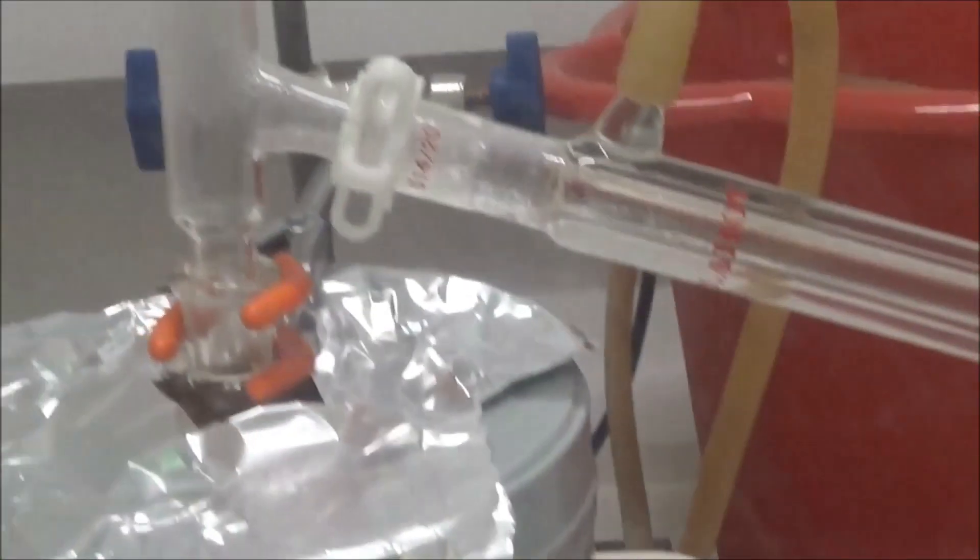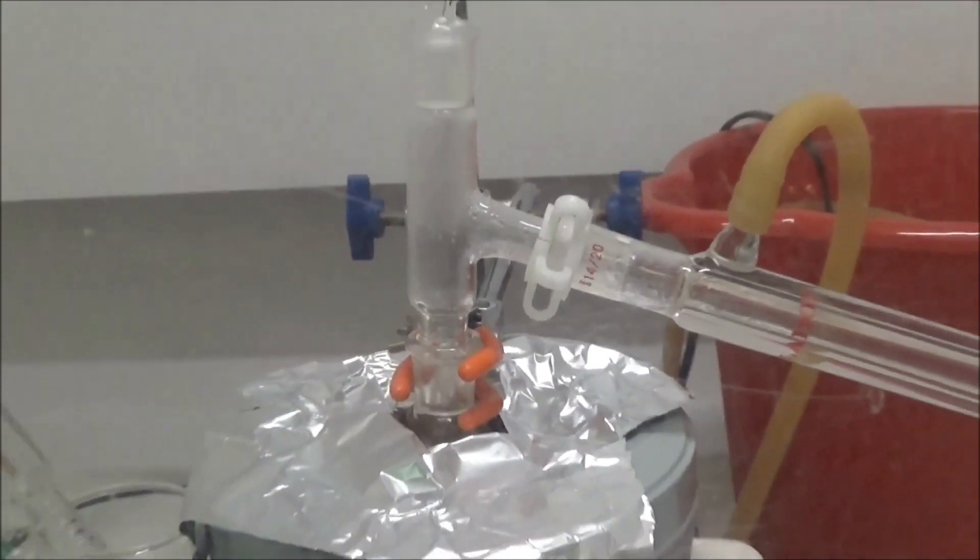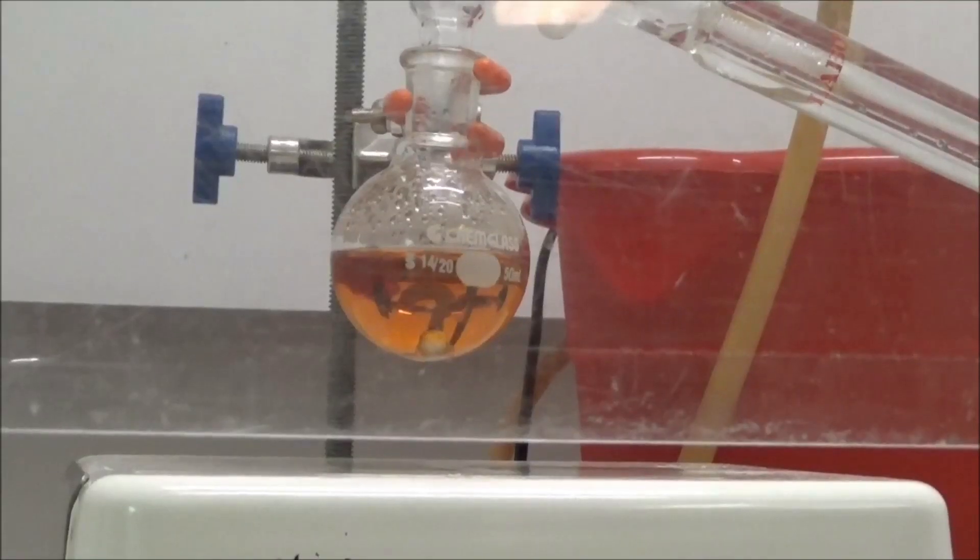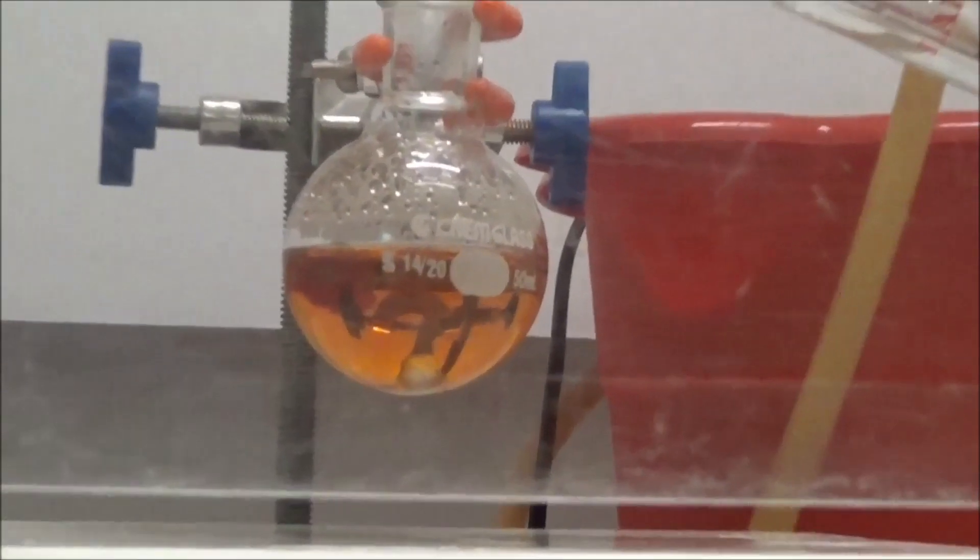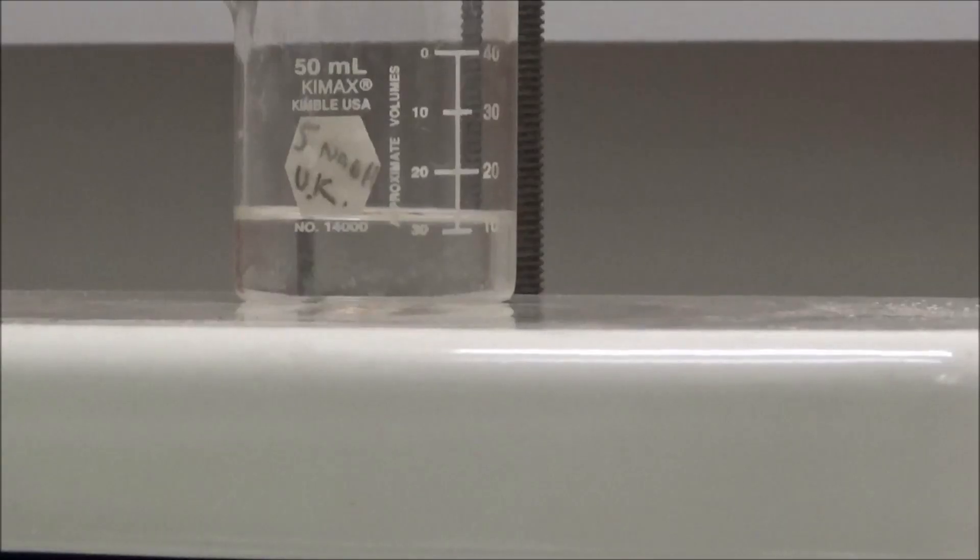After this, the distillate separated into two layers, and there was only one layer present in the boiling flask. The bottom layer, seen here, is the bromobutane.